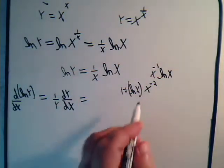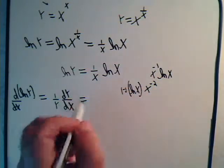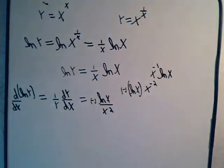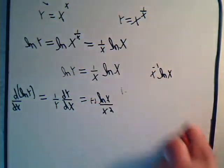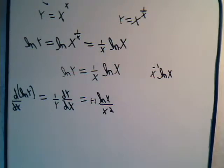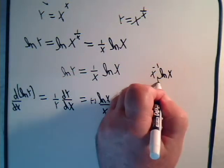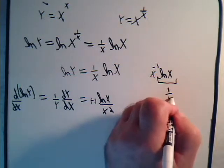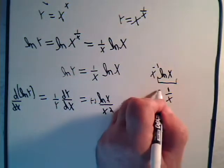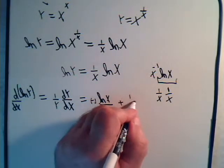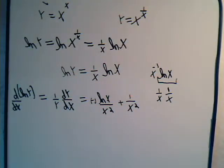So this times the derivative of that term gives us negative natural log of x divided by x squared. Then we add this times the derivative of the natural log of x, which is 1 over x times dx/dx, equal to just 1, multiplied by x to the minus 1, giving plus 1 over x squared.